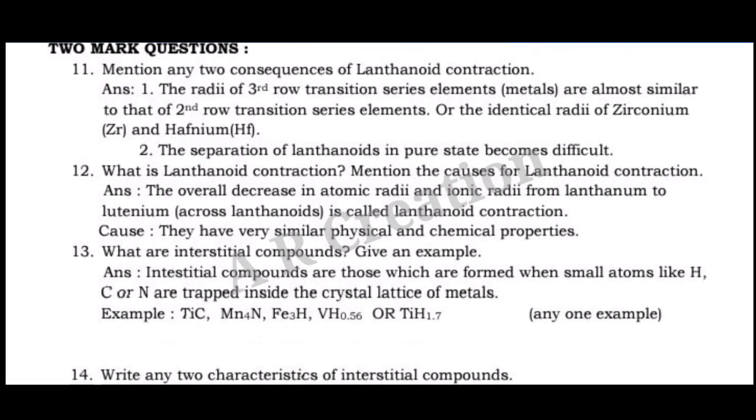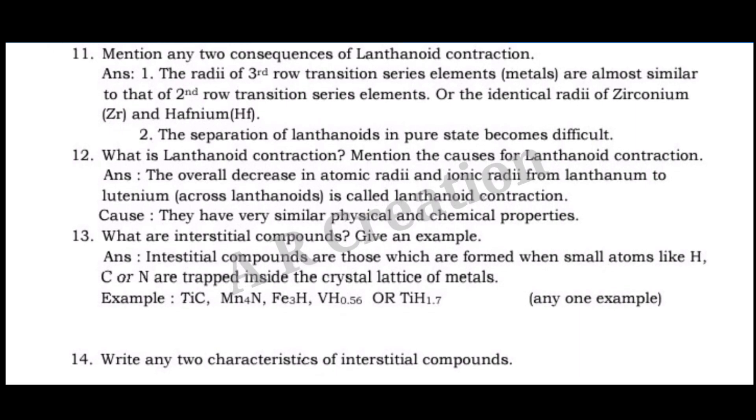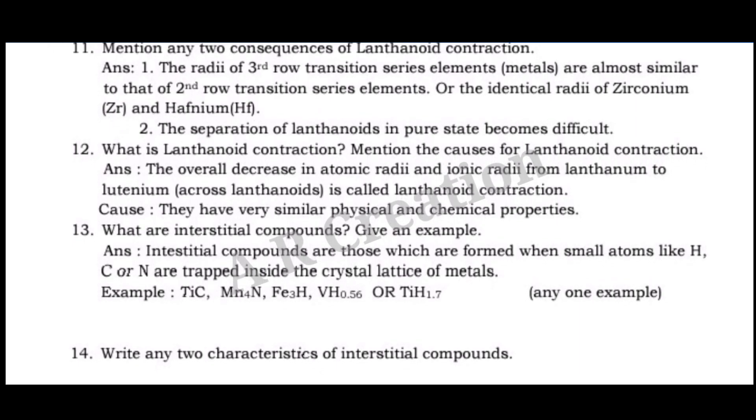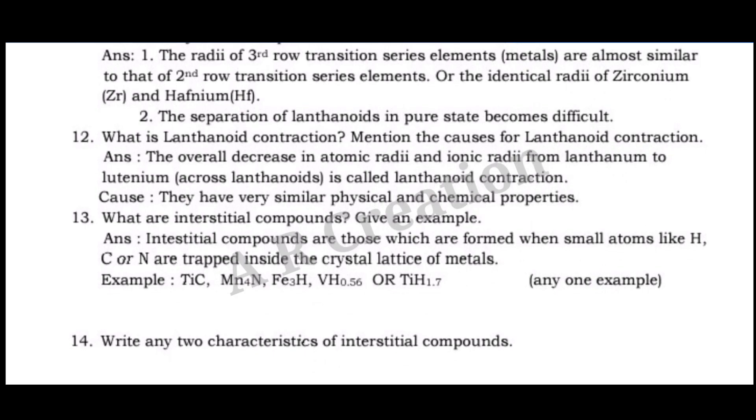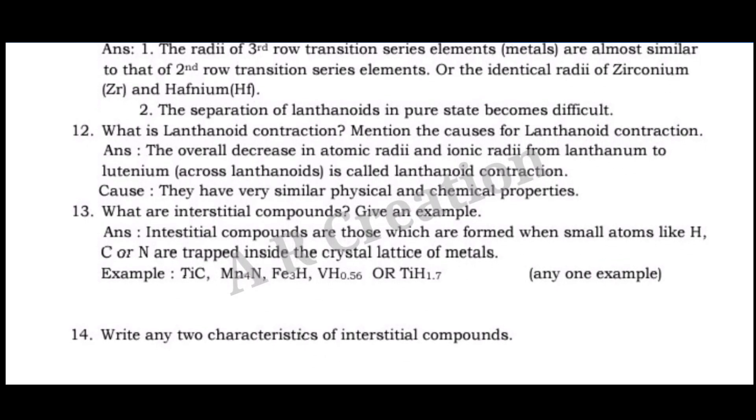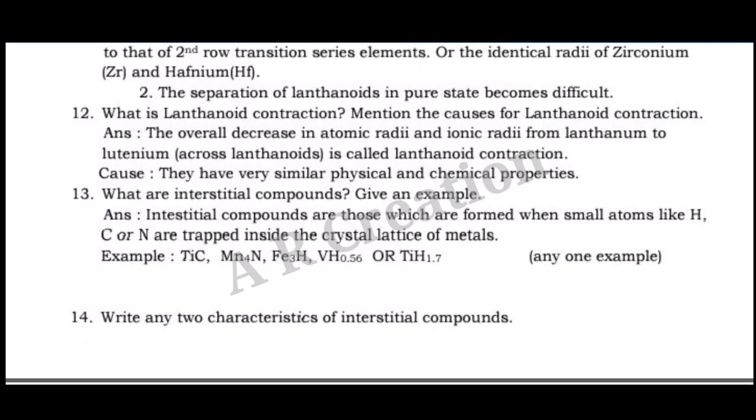Question 12. What is lanthanoid contraction? Mention the causes for lanthanoid contraction. Answer: The overall decrease in atomic radii and ionic radii from lanthanum to lutetium across lanthanoids is called lanthanoid contraction. Cause: They have very similar physical and chemical properties.